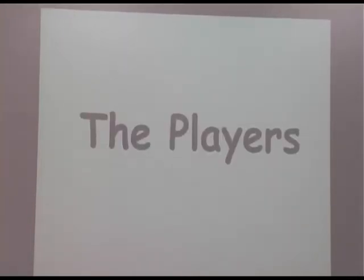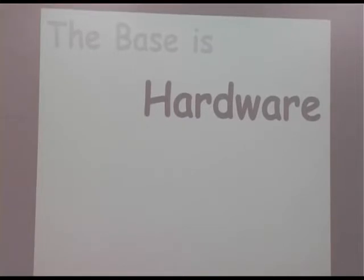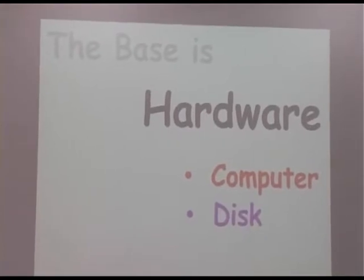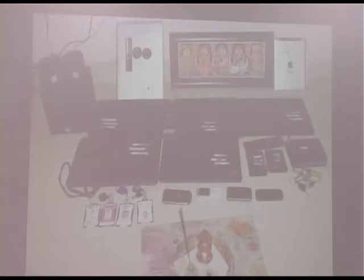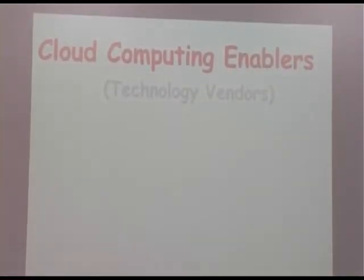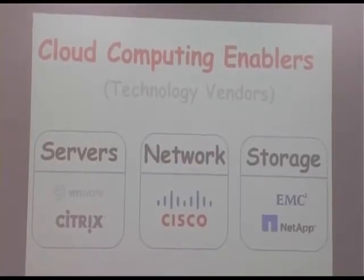Who are the parties involved in cloud computing? The base is hardware: you need computers, disks to store data, and switches to connect everything. Even with arbitrary hardware — computers, hard disks, routers — you can build a cloud. But you also need technology vendors: software to pool everything and provide computational power. For servers, VMware and Citrix; for networking, Cisco; for storage, EMC and NetApp are major providers. You buy solutions from all three, orchestrate everything, and build your cloud.